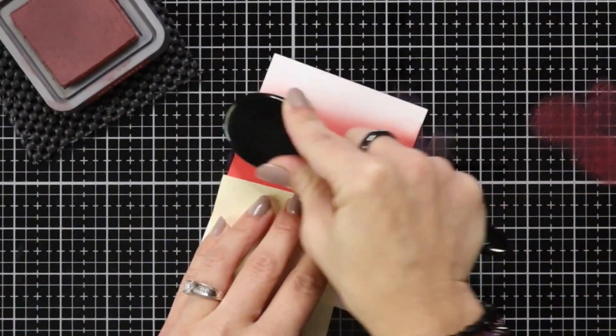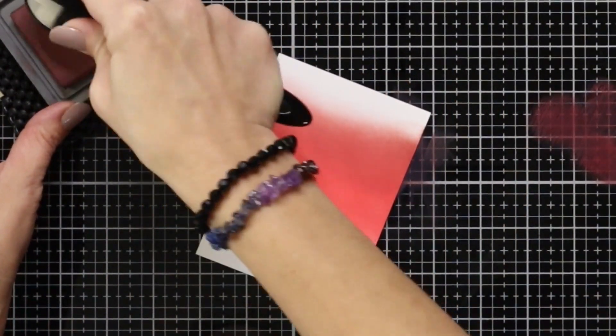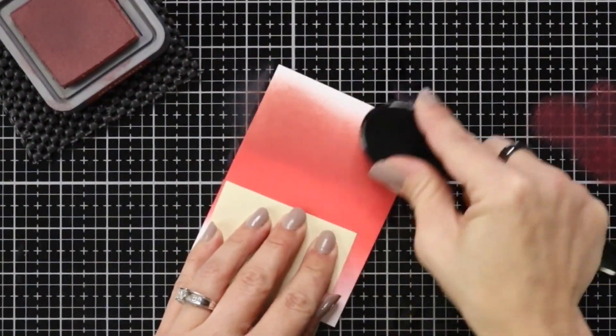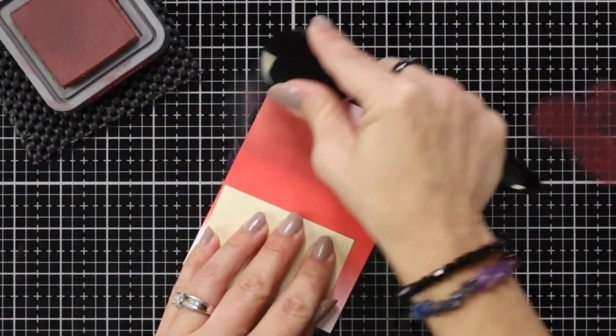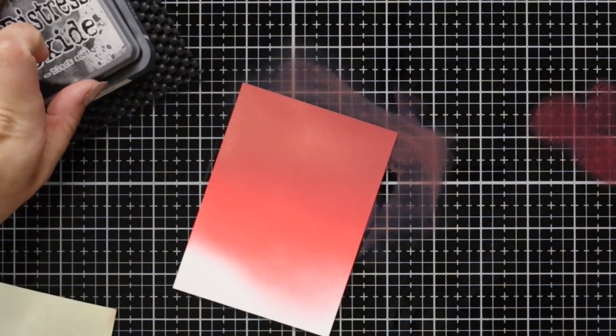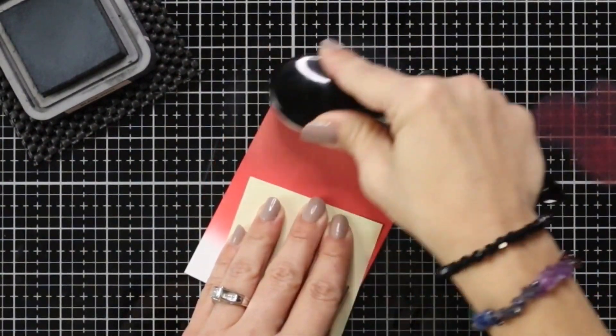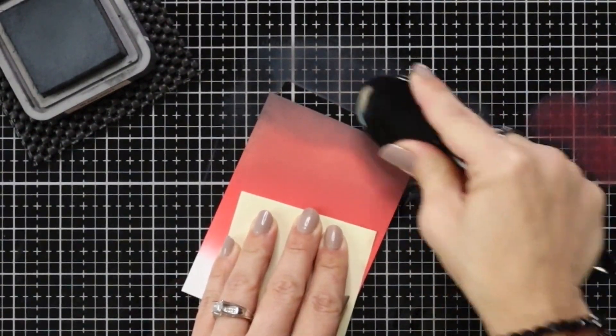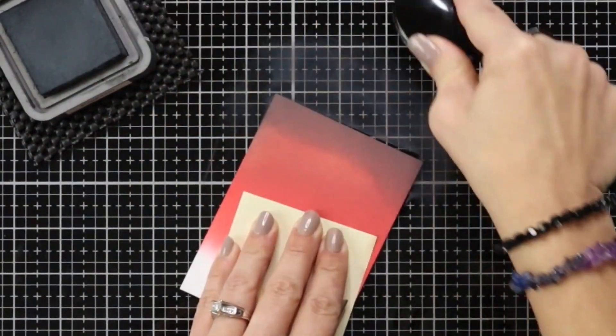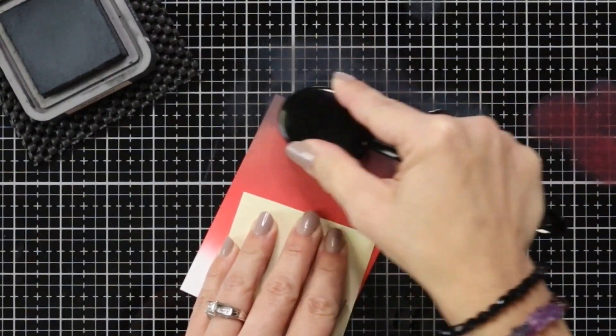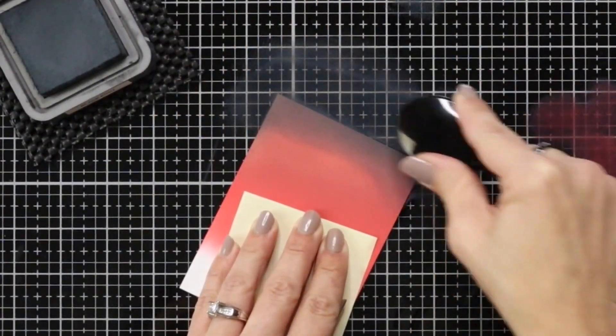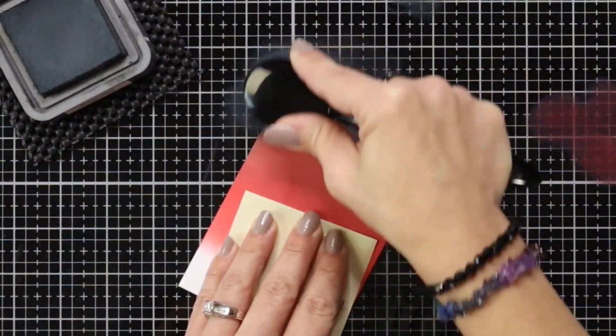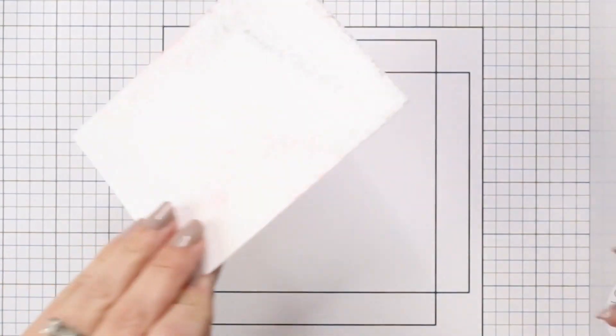So I started with my festive berries and then I'm coming in with aged mahogany, adding that right above there and then blending into the festive berries just a little bit and then I'm going to top it off with black soot. Now I will go back and forth between the colors. I kind of like to add layers of colors to the cardstock. That just helps darken all of these colors up. So I do go back and forth between all of the colors until I'm happy with my blend.